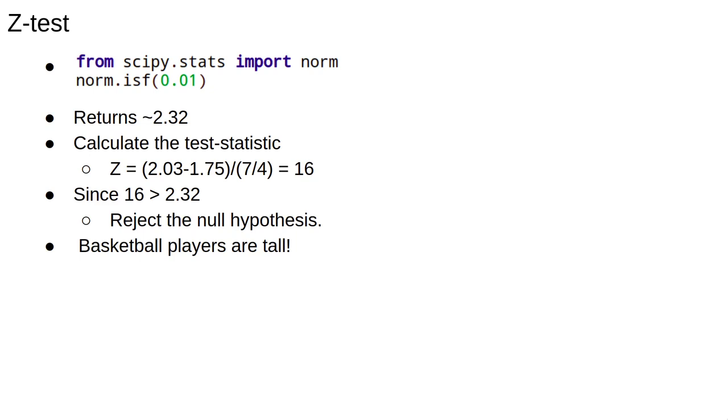We can now calculate the test statistic which is z equals 2.03 minus 1.75 over 7 divided by the square root of 16, which is the z-score of roughly 16. Since 16 is greater than 2.32, we can reject the null hypothesis and therefore basketball players are not average height.